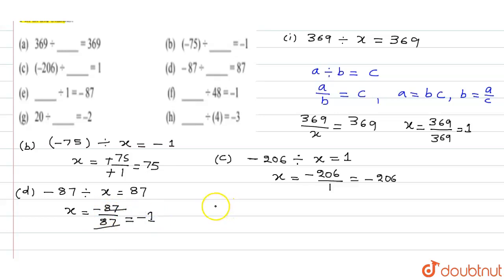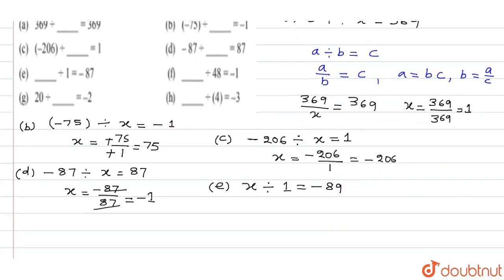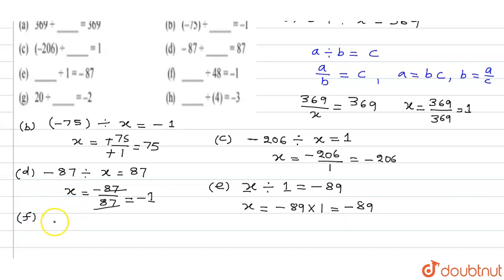Question e: x divided by 1 equals minus 87. From the formula, x equals minus 87 multiplied by 1, which equals minus 87.